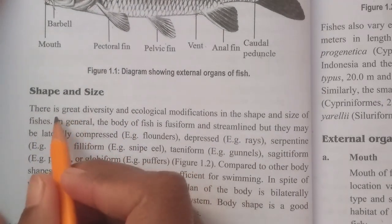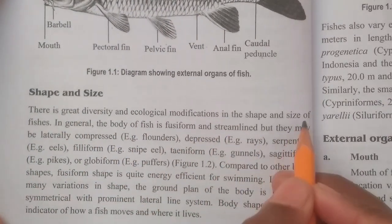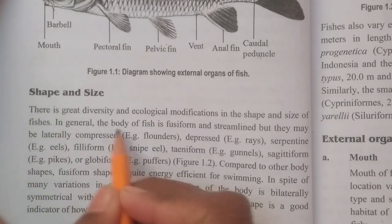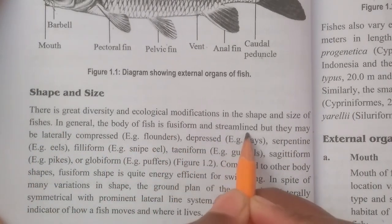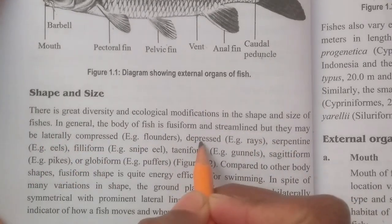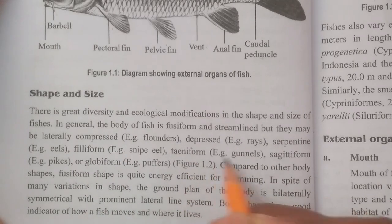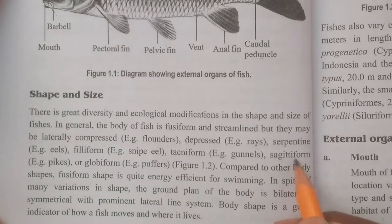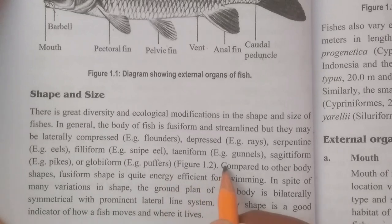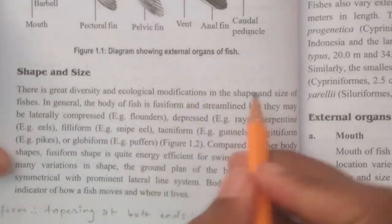There is great diversity and ecological modification in the shape and size of fishes. In general, the body of fish is fusiform and streamlined, but they may be laterally compressed, depressed, serpentine, filiform, taeniform, sagittiform, or globiform.